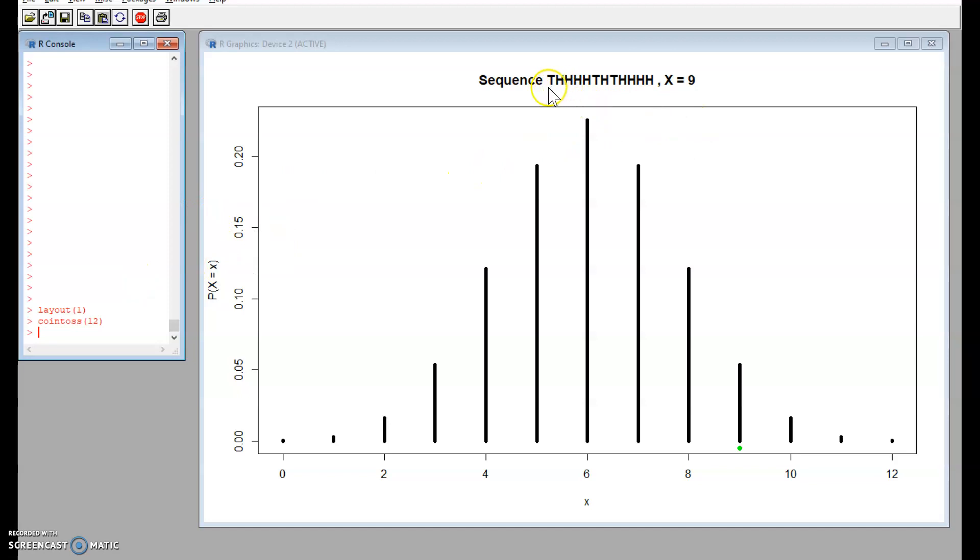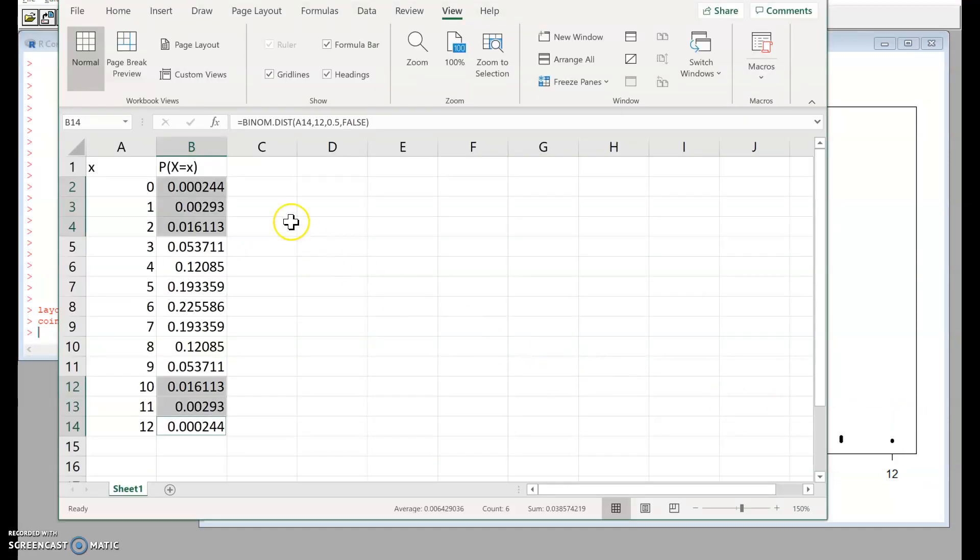If I toss a coin 12 times here I have a sequence tail, four heads, tail, head, tail, four heads, x equals 9. We might think was that the sort of thing that we might expect. A little green dot here showing us where it sits in the probability distribution. These black bars are plotted at the heights that we had in that Excel column.